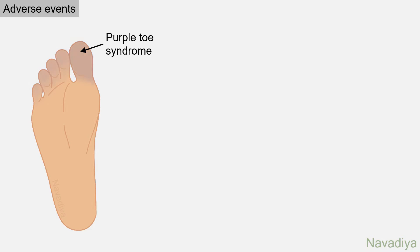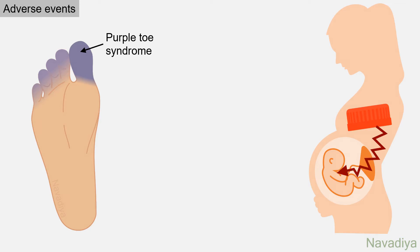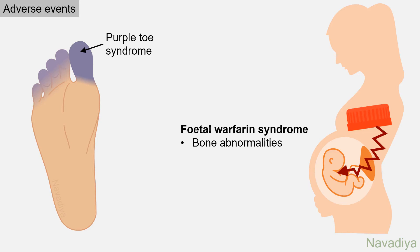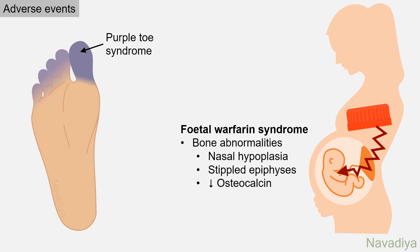The next adverse event is purple toe syndrome, where the bottom and sides of toes turn purple and become very painful. Additionally, warfarin crosses the placenta and produces deleterious effects on the fetus — it can cause fetal warfarin syndrome, in which the fetus has bone abnormalities like nasal hypoplasia, stippled epiphyses, etc., possibly due to reduced osteocalcin, another vitamin K dependent protein. There can also be CNS abnormalities and hemorrhagic complications in the fetus.